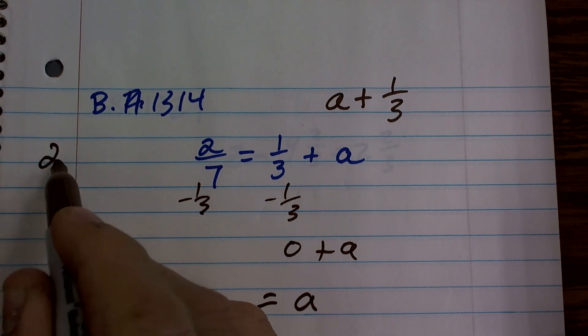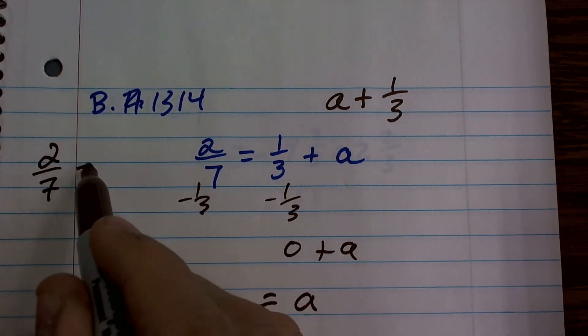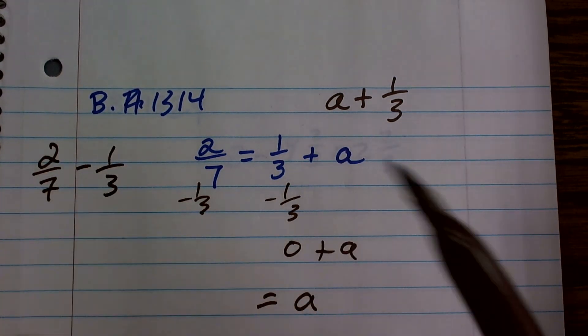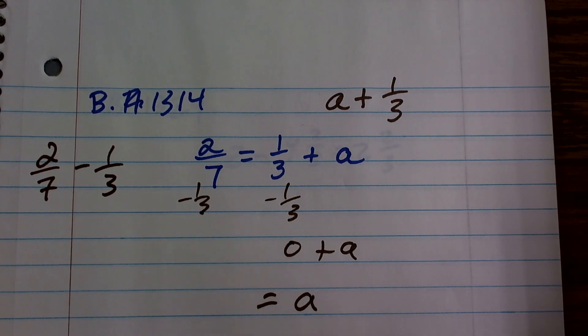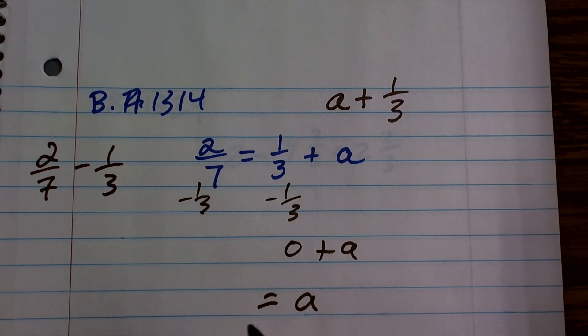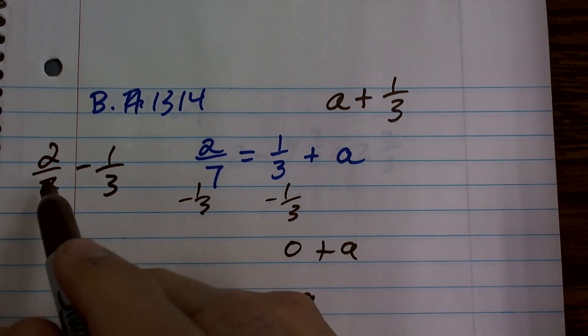Now, all I need to do is figure out what is 2/7 minus 1/3. To do that, remember, when we're subtracting fractions, we have to get the same denominator.